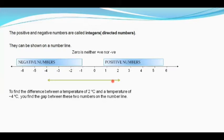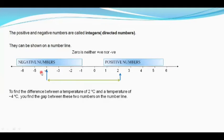We move from two to reach minus four. We have to move six places to reach minus four. That is how the difference between two degrees Celsius and minus four degrees Celsius is six degrees Celsius.